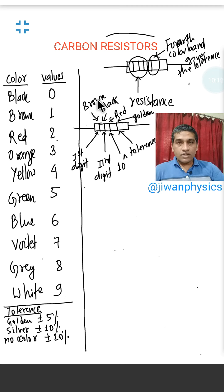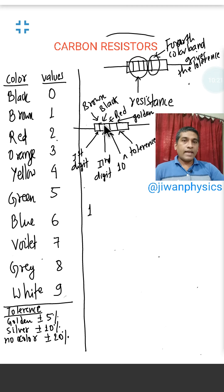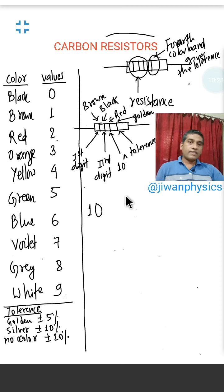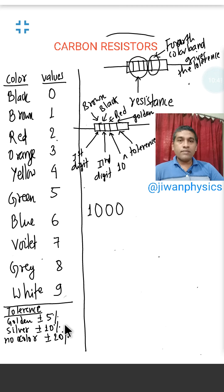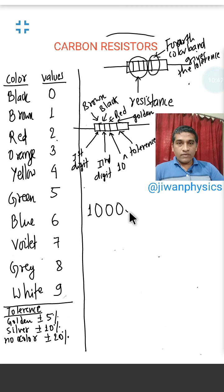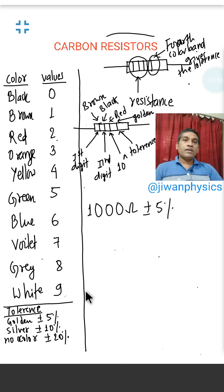For Brown color, the first digit is 1. The second color Black gives the second digit 0. The third color Red gives the number of zeros, which in this case is 2 — so there are two zeros. Therefore the value of resistance is 1000 ohms. And we have tolerance of plus or minus 5% for the golden color band.